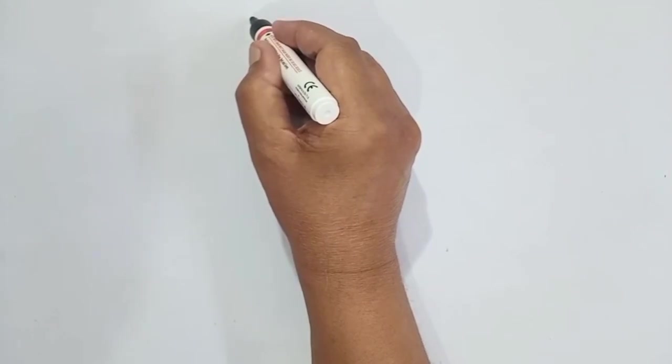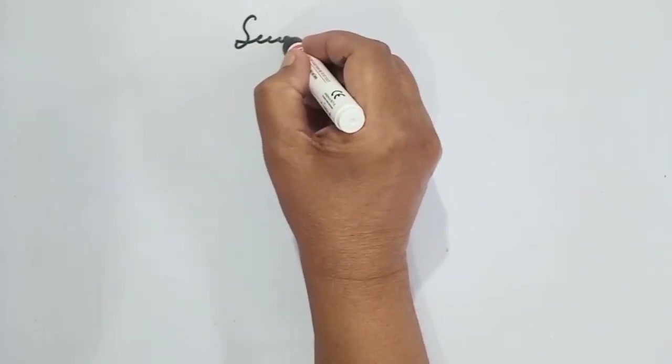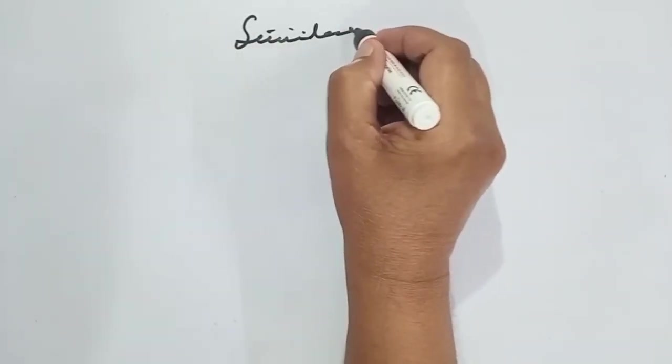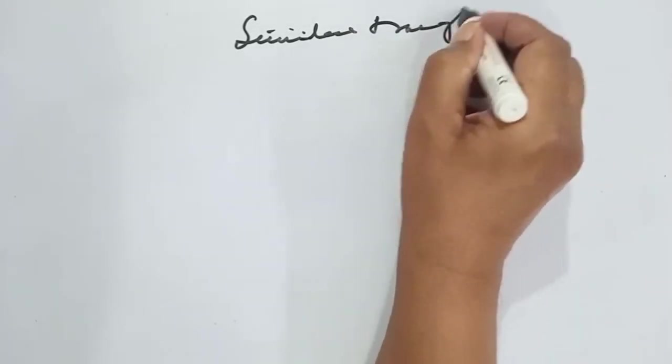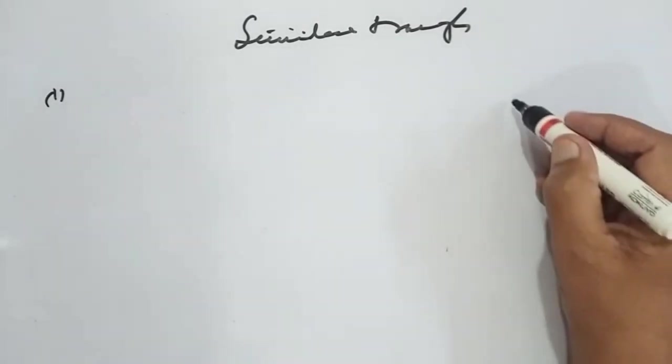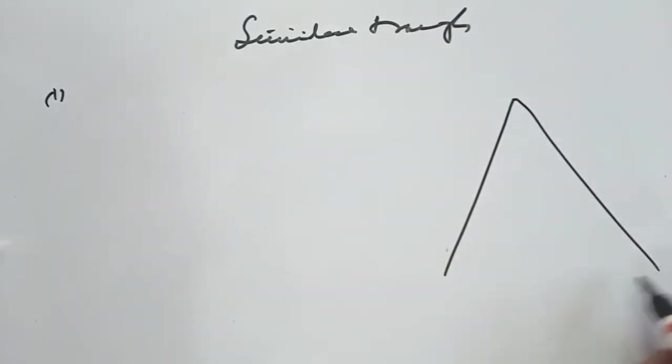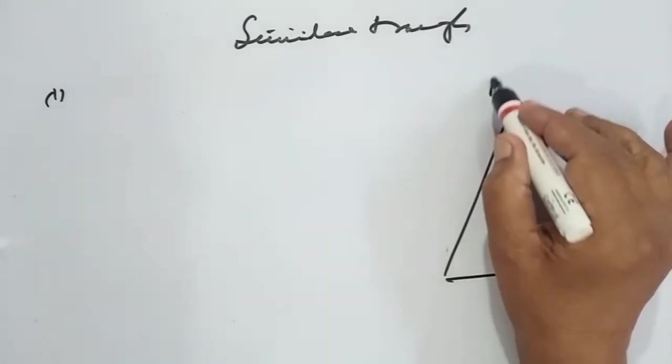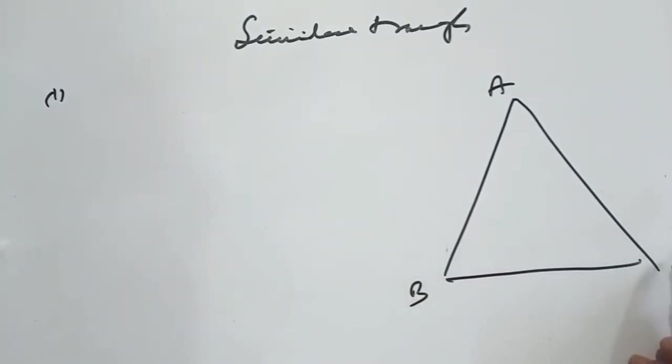We now take up some questions of similar triangles. Remember first, we are given this angle ABC.